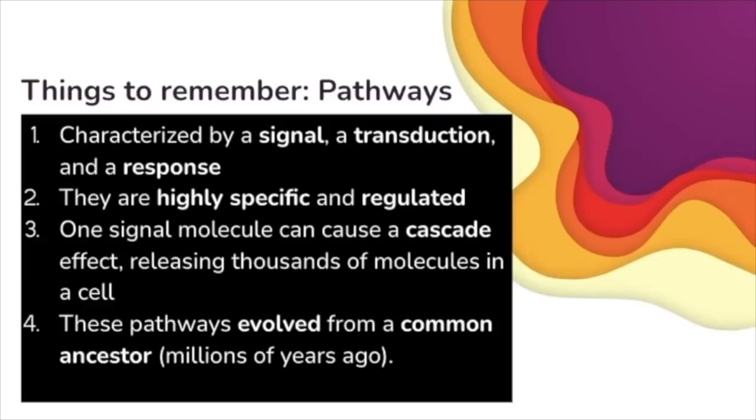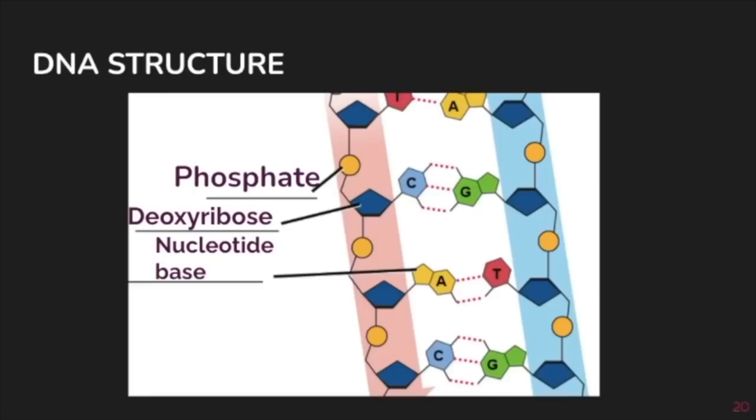A lot of students really get worried about cell signaling pathways. These are not that complicated, but do remember cell signaling pathways are characterized by a signal, a transduction, and a response. That signal could be something generated by a unicellular organism or could be part of multicellular signaling pathways. Signaling pathways are highly specific and regulated. One single signaling molecule can cause a cascade effect, releasing thousands of molecules in a cell. These pathways probably evolved from a common ancestor millions of years ago. The result of a signal transduction pathway could be gene expression, production of a hormone, suppression of genetic activity, or even apoptosis, which is programmed cell death.